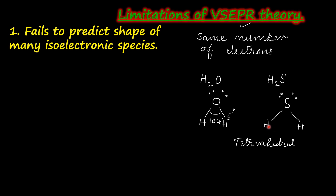Whereas in the case of hydrogen sulfide, the angle H-S-H is found to be 92.1 degrees. In reality, this angle is 92.1 degrees and the angle H-O-H is 104.5 degrees. So in the case of the water molecule, the bond angle is larger than that of hydrogen sulfide. VSEPR theory cannot explain why this bond angle is different. Though the shape is said to be tetrahedral, the angle is not the same.